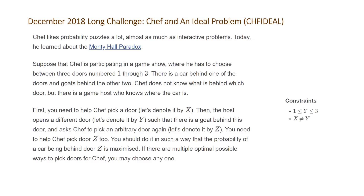The problem states Chef likes probability puzzles a lot, almost as much as interactive problems. Today he learned about the Monty Hall paradox. Suppose that Chef is participating in a game show where he has to choose between three doors numbered one through three. There is a car behind one of the doors and goats behind the other two. Chef does not know what is behind which door, but there is a game host who knows where the car is.